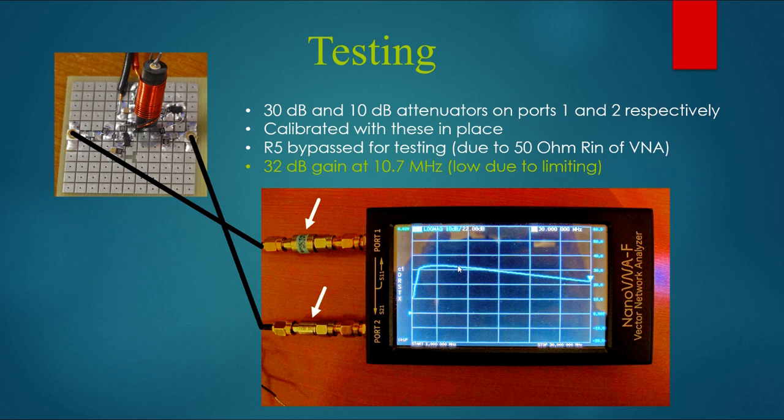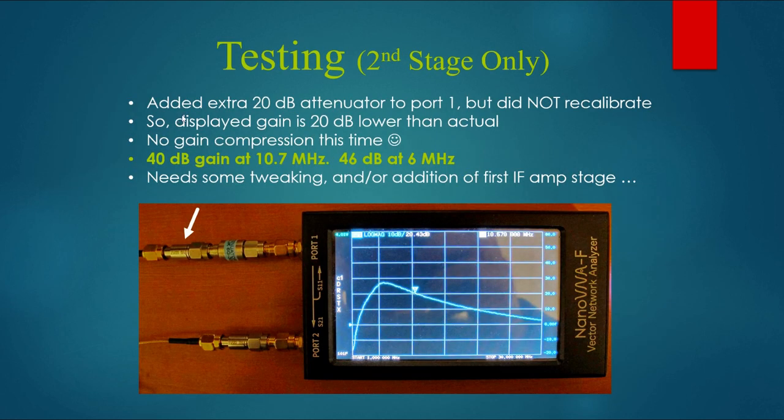But that's less gain than we were expecting based on our simulation. And in addition to that, we don't see the peak that we did in the sim. And that's because we have limiting going on in this amp. So to get it to stop limiting, we added a second attenuator, another 20 dB on port 1. So that what goes into the amplifier is now minus 50 dBm or so. We did not recalibrate because that would be a very weak signal to do the cal with. So we just have to visually adjust. Whatever we see on the curves over here, we add 20 dB to that. We actually have a gain of 40 dB at 10 megahertz. Interestingly, it peaks at 6 megahertz. So clearly we need to do some tweaking. Something is a little off in the sim. Remember those models were not exact models for the transistors we were using.